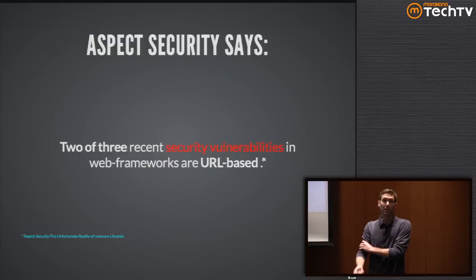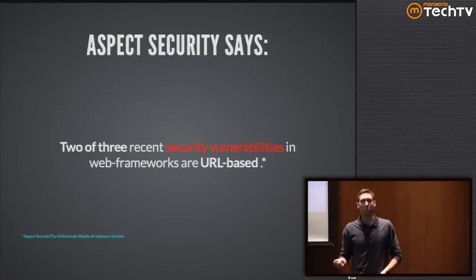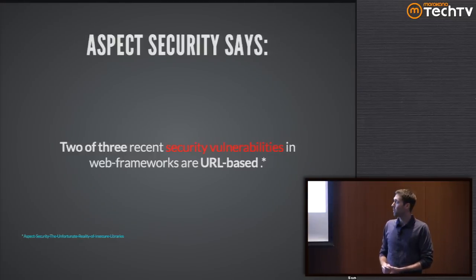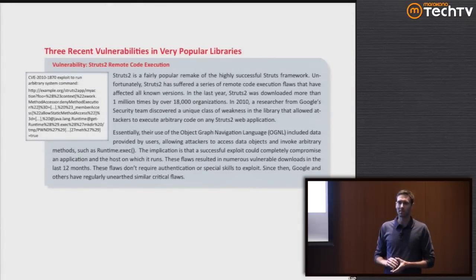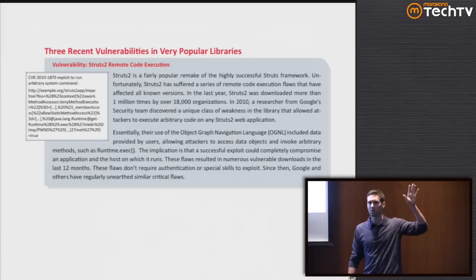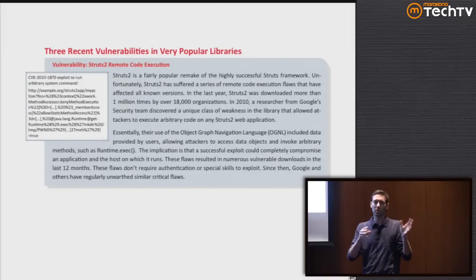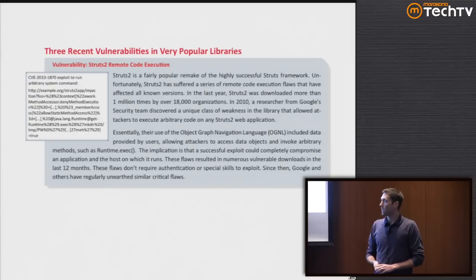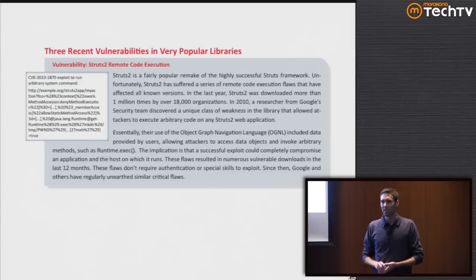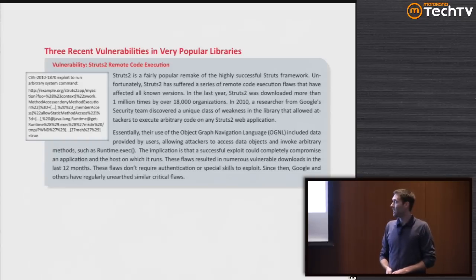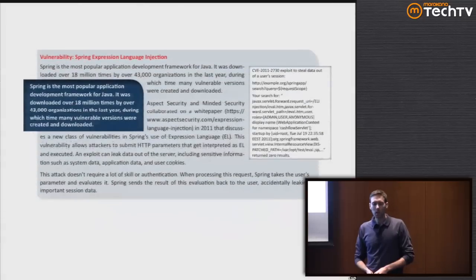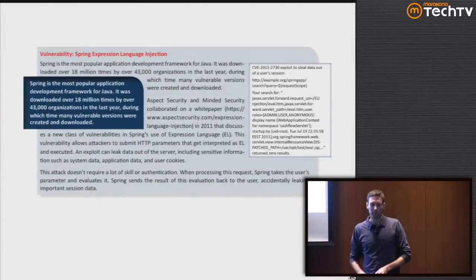An interesting study by Aspect Security said that two of the three recent vulnerabilities discovered in web frameworks were URL-based - and these gave actual root access. How many people are familiar with Expression Language in Java? You provide a string that gets decoded, evaluated, and executed. It lets you type static Java method calls like System.exec, which gives access to the user's account on the system running the Java application. That was an exploit in Struts, in Spring, and also in Seam.